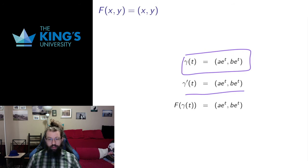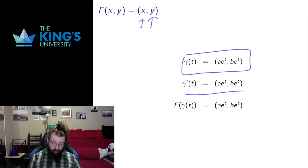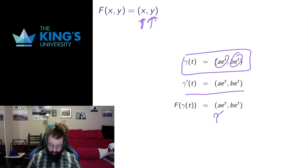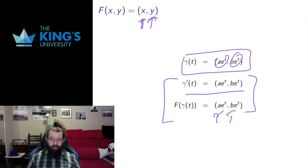The derivatives of exponential functions — the constant stays as the constant — so these derivatives are the same. If I evaluate the vector field on the parametric curve, I just take the x component and put it in x, take the y component and put it in y, so these stay, and I get exactly the same thing. The derivative of the parametric curve and the vector field evaluated on the parametric curve are exactly the same.